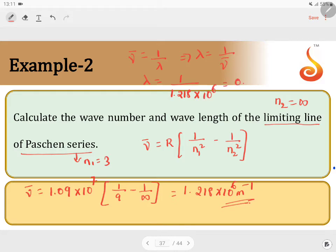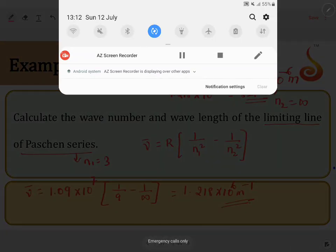This is 0.821 into 10 power minus 6 meters or shift 3 decimals. You get 821 nanometers into 10 power minus 9 meters. 10 power minus 9 meter is nothing but nanometers.